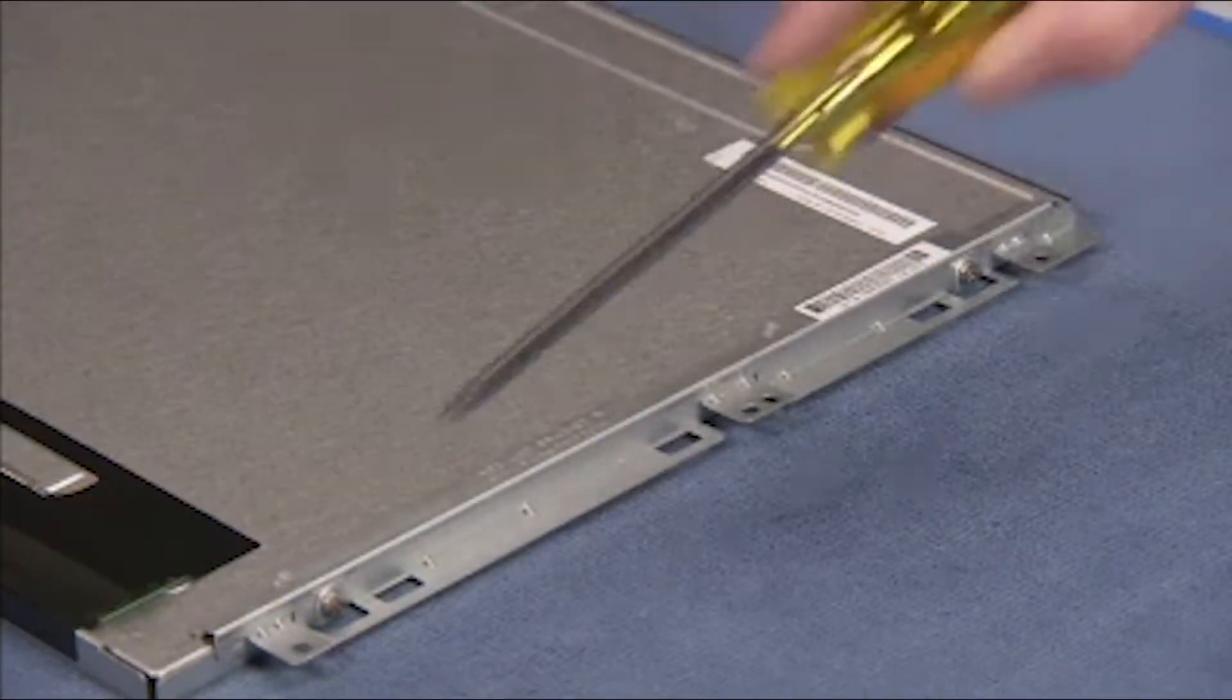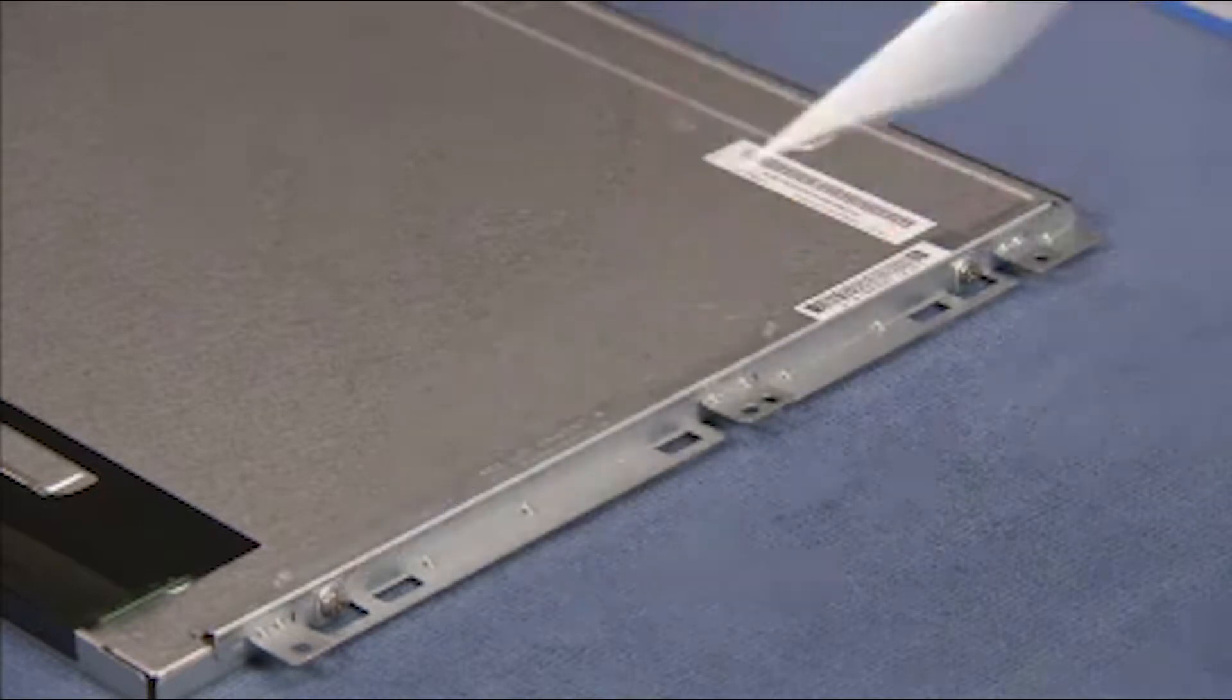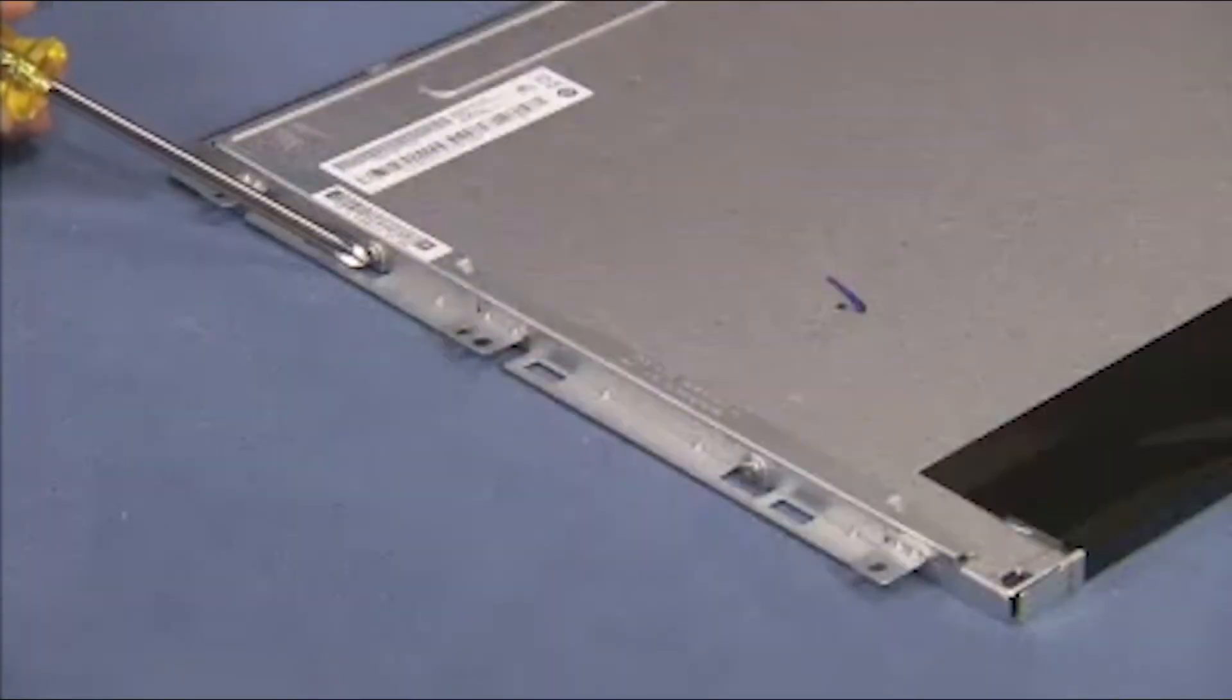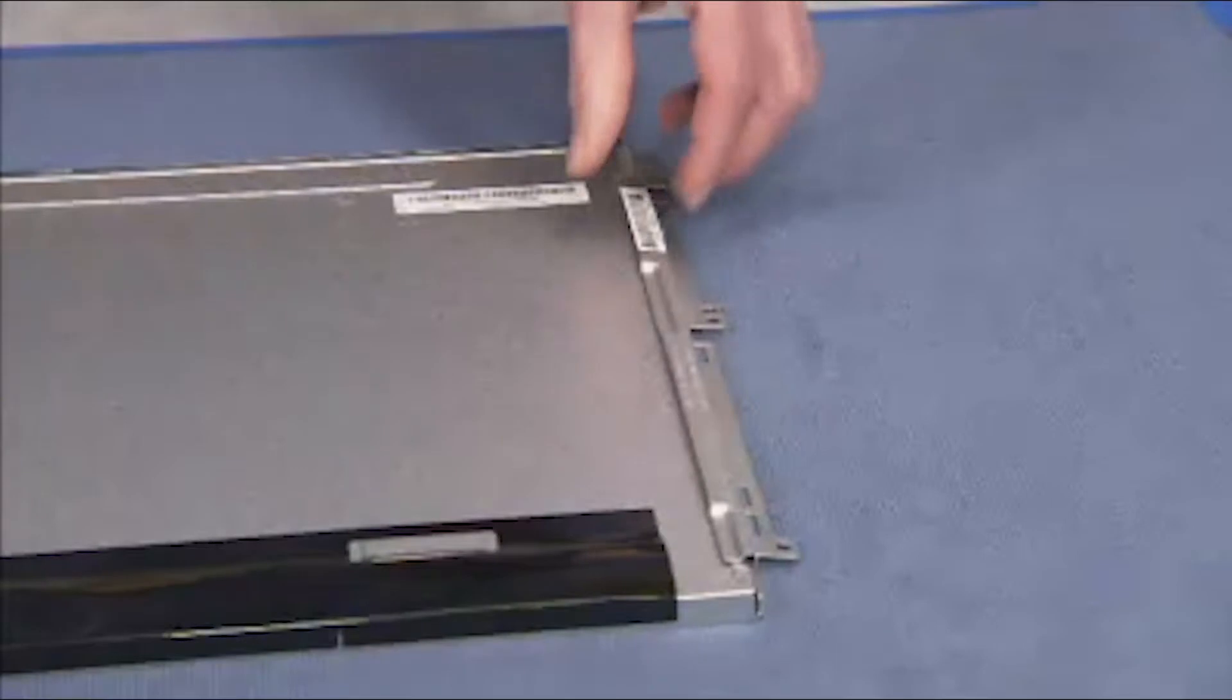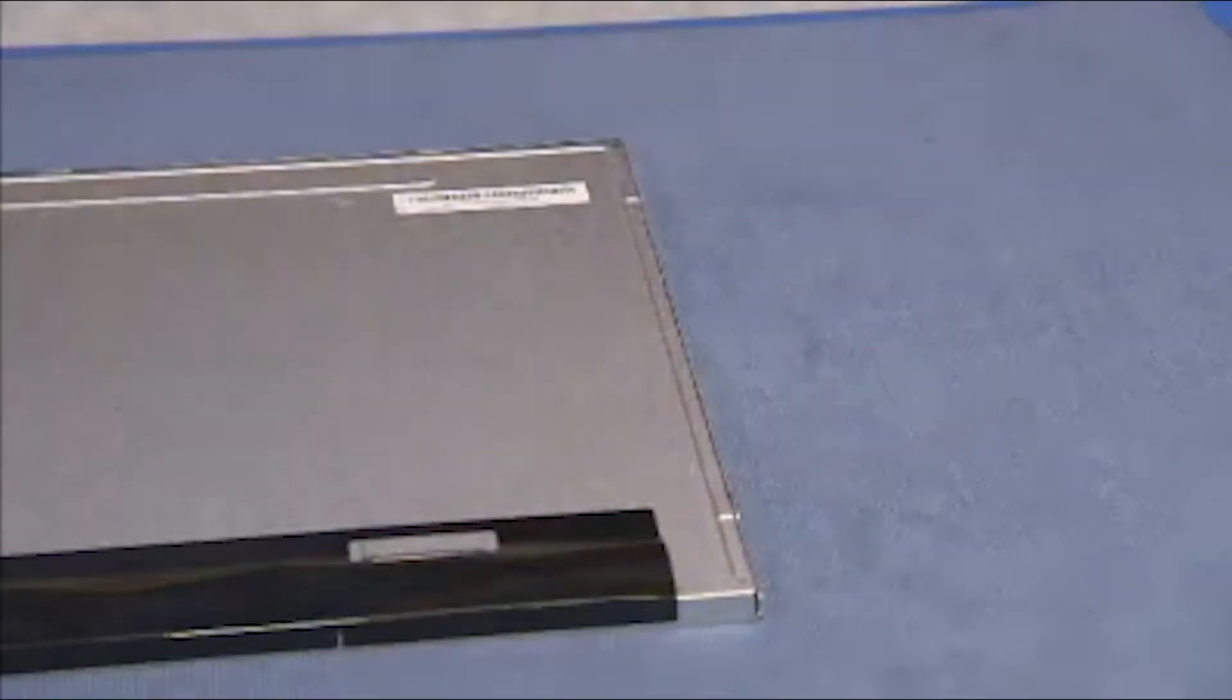Remove the brackets from the side's panel assembly. To do so, detach the two Phillips number two screws for each bracket and pull the bracket off of the panel.